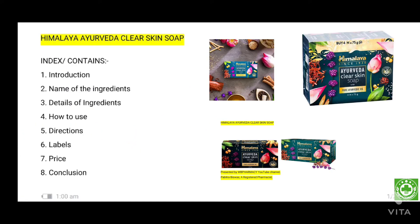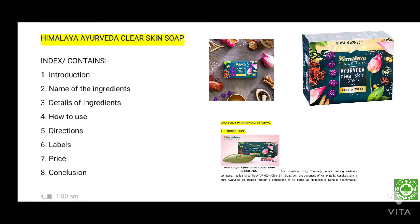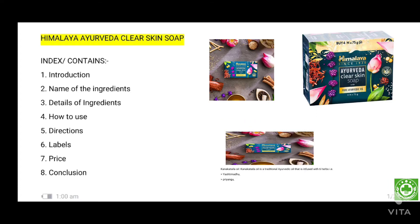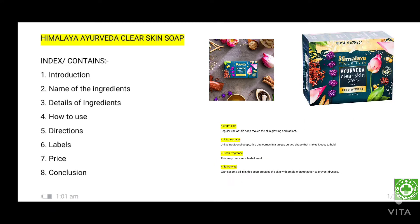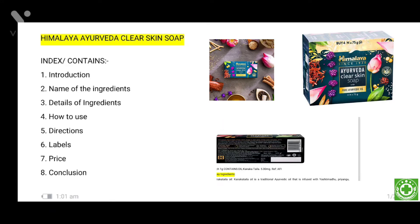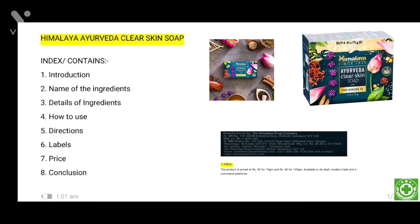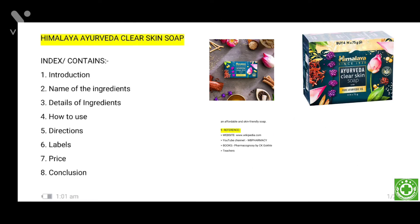Hello dear all Indian pharmacists, welcome again to WB Pharmacy YouTube channel. Today's topic is on pharmacognosy — Ayurvedic or herbal product. The name is Himalaya Ayurveda Clear Skin Soap. This video index or contents includes: number one, introduction; number two, name of the ingredients — there are six herb ingredients; number three, details of ingredients.